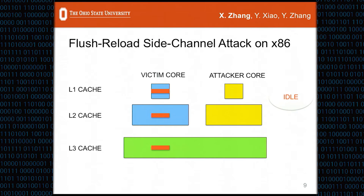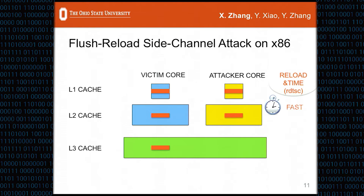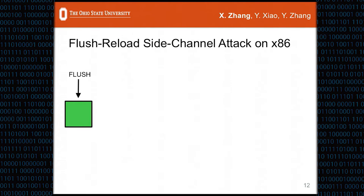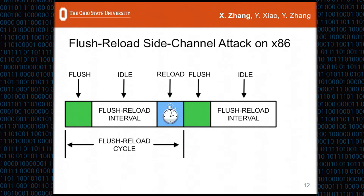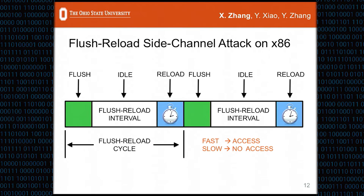After the idle period, the attacker performs a reload and measures time using RDTSC. If a fast reload is observed, it means the cache line is in the L3 cache, indicating the victim accessed the cache line during the idle period. In summary, a Flush+Reload cycle consists of flush, idle, and reload. If a fast reload is observed, the victim accessed the cache line; if the reload is slow, the victim did not access it.